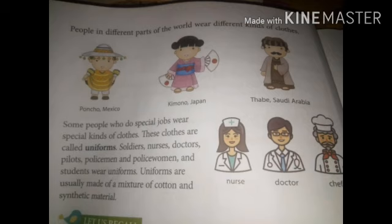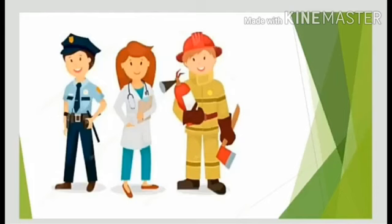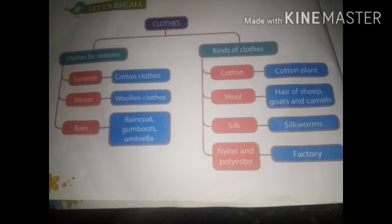Soldiers, nurses, doctors, pilots, policemen, policewomen and students wear uniforms. Uniforms are usually made of a mixture of cotton and synthetic material. Look at these pictures showing different types of uniforms. Let us recap this chapter.